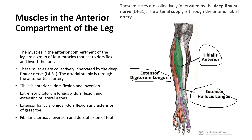One important point is that all these muscles are innervated by the deep fibular nerve. The deep fibular nerve is a branch of the common fibular nerve, which is again a branch of the tibial nerve, and the tibial nerve is a branch of the sciatic nerve. So all muscles in the anterior compartment of the leg are innervated by the deep fibular nerve, L4 to S1, and the arterial supply is via the anterior tibial artery.